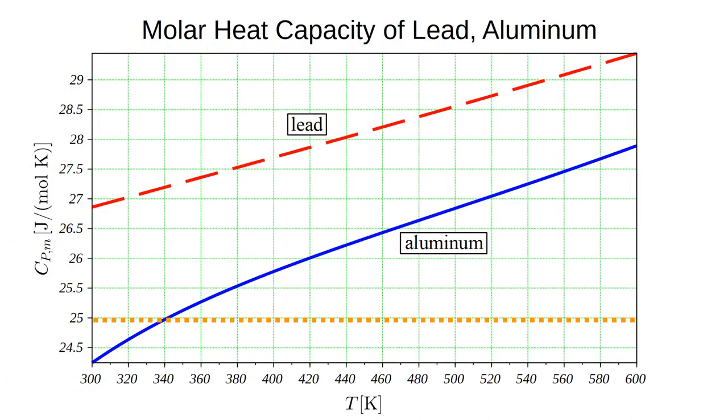Here are the molar heat capacities of lead and aluminum as a function of temperature, from roughly room temperature at three hundred Kelvin, up to six hundred Kelvin. The lead curve is quite linear. At higher temperatures, the aluminum curve is also. The dotted horizontal line is the Dulong-Petit value.